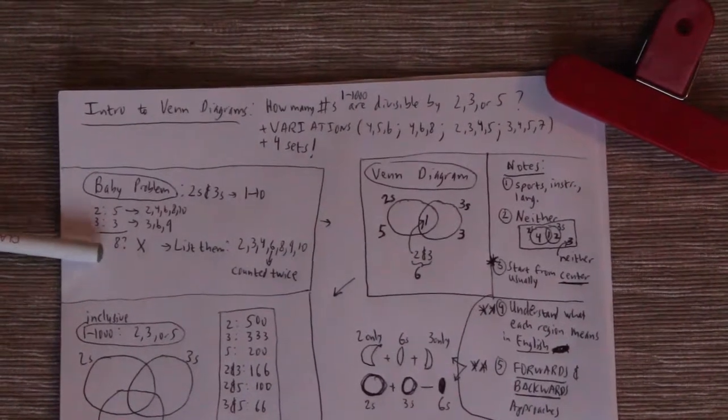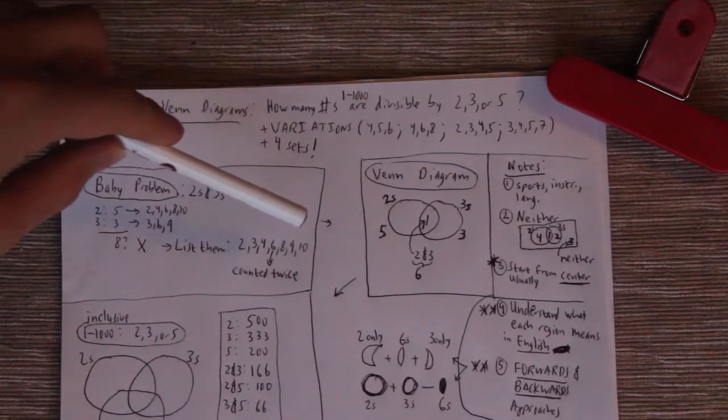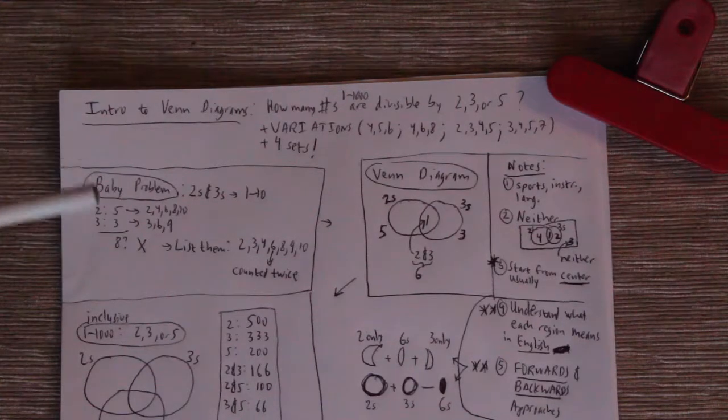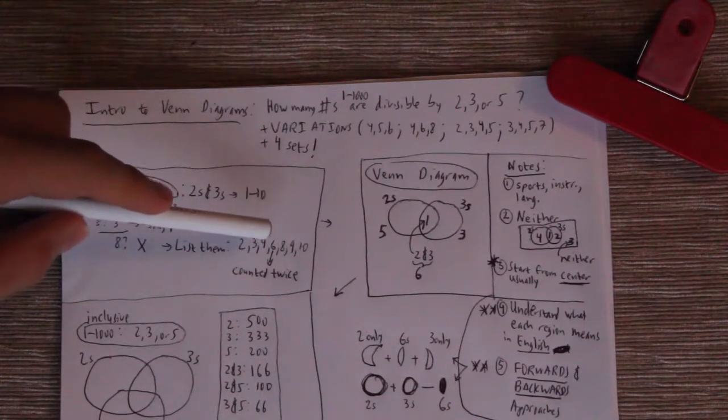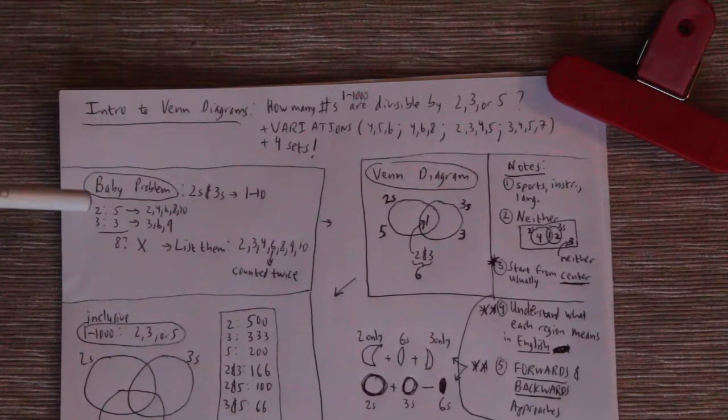Except that would be wrong, because if we actually go and list the numbers out, we'll get 2, 3, 4, 6, 8, 9, 10. If you stare at this for a second, you'll quickly realize, why is there a discrepancy between 8 over here and the 7 over here? Because we've counted the 6 twice as part of the twos and as part of the threes.